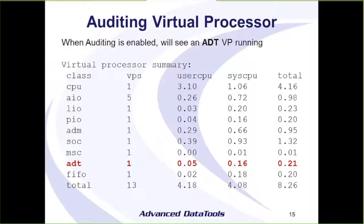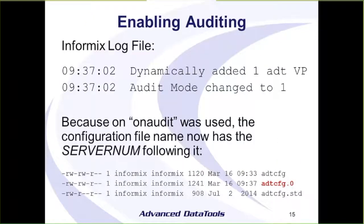As soon as auditing is enabled, a new virtual processor starts up — the ADT virtual processor. A message is also written to the Informix log file. Because we used on-audit to modify the auditing configuration settings, it creates a copy of the ADTCFG file and appends the server number after it. So we now have ADTCFG.0, where zero is the server number of the instance.